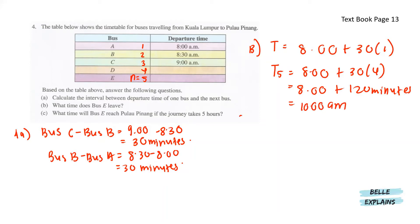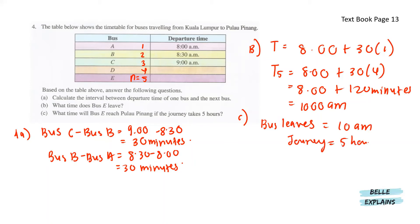And lastly for C, if the bus leaves at 10 a.m. and the journey is 5 hours, they will reach at 10 a.m. plus 5 hours, and that will give us 3.00 p.m.